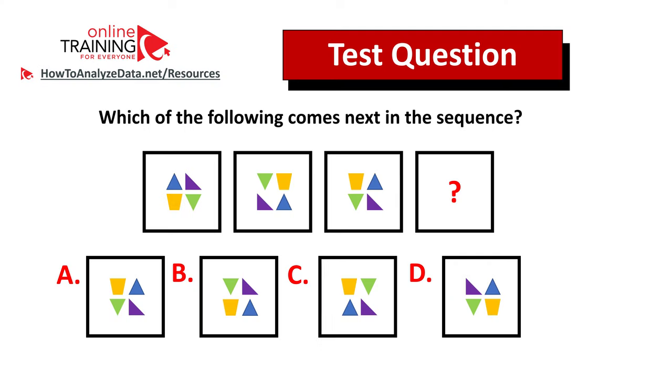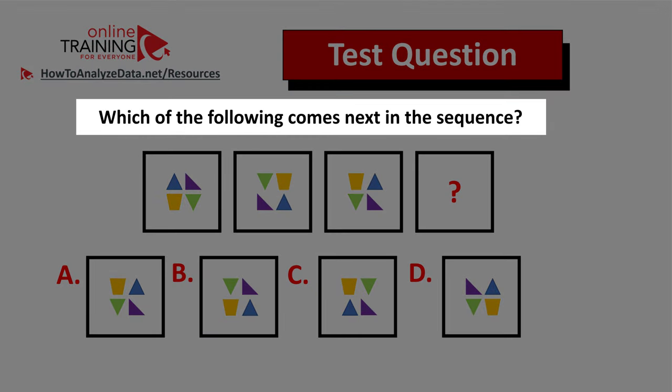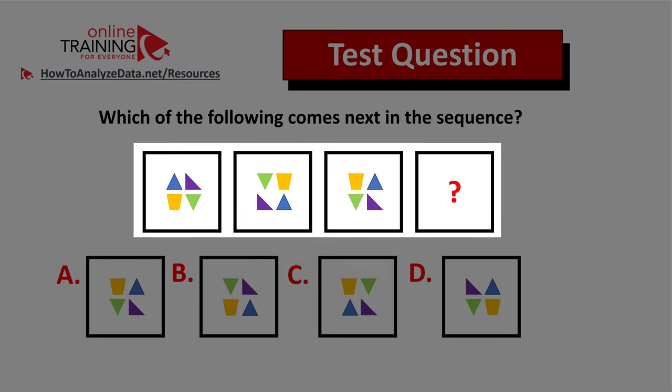Here's a tricky question to test your pattern recognition skills. Which of the following comes next in the sequence? You're presented with a sequence of five squares, each square has smaller shapes inside. The fourth square is unknown.